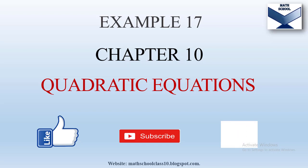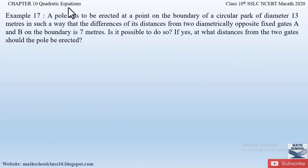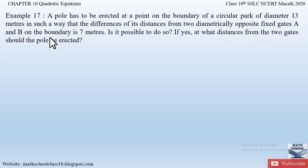Example 17 from Chapter 10, Quadratic Equations: A pole has to be erected at a point on the boundary of a circular park of diameter 13 meters, in such a way that the difference of its distances from two diametrically opposite fixed gates A and B on the boundary is 7 meters.